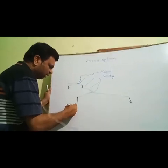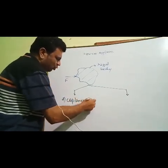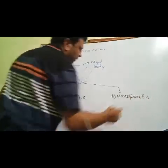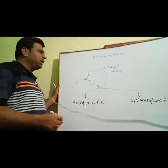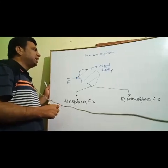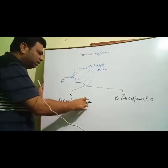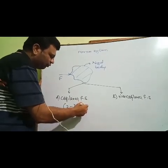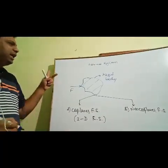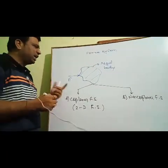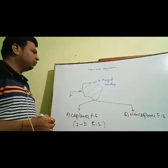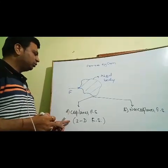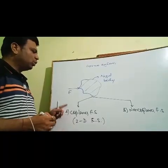We divide this force system into two categories: co-planar force system and non-co-planar force system. When all the external forces acting on a rigid body lie in one plane, then it forms a co-planar force system. This is also known as a two-dimensional force system, whether in the xy, yz, or xz plane.